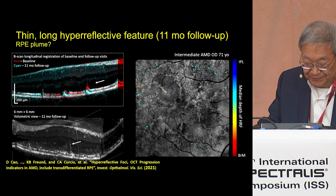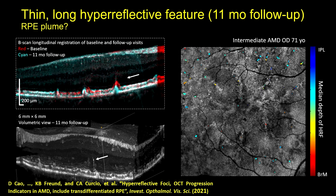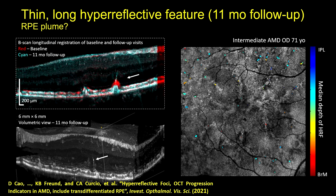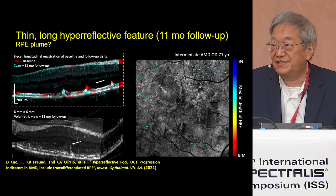By using volumes, it's possible to do longitudinal studies. This is a follow-up at 11 months, comparing two volumes which have been registered, and we can actually see the motion of the hyper-reflective features as well as the enlargement or collapse of drusen. There's potential for having a lot of data in these types of volumes, and again the challenge is to quantify them and relate them to disease.